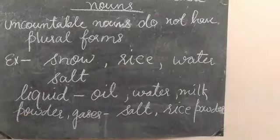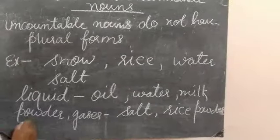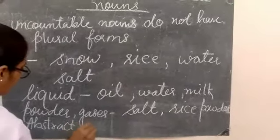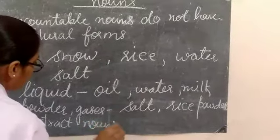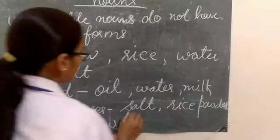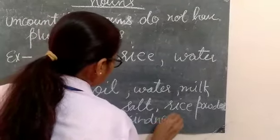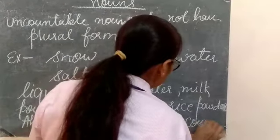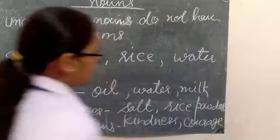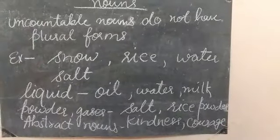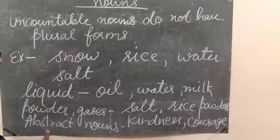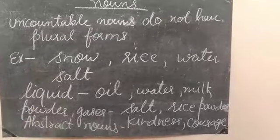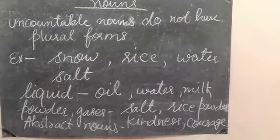Next, uncountable nouns can also be in the form of abstract nouns. Abstract nouns are always uncountable nouns. Like kindness — can you count it? No. Like courage — can you count it? No. Abstract nouns cannot be counted, so these are uncountable nouns.